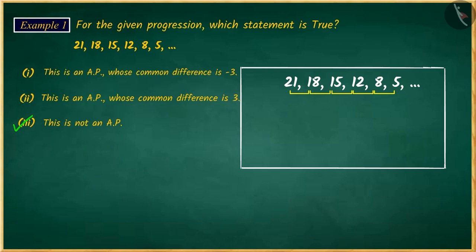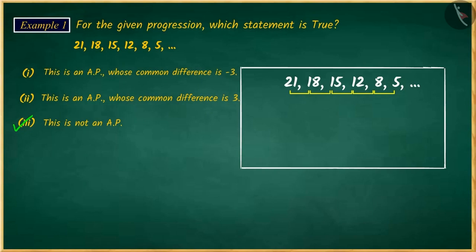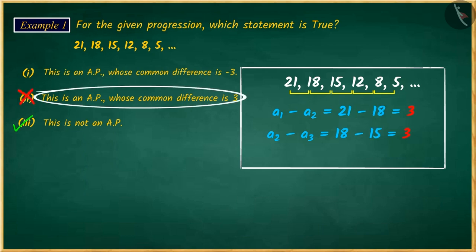Can you tell what was the mistake committed while solving this question which led us to choose the wrong option? For the given series, the common difference for only the first three consecutive terms was found. There too, instead of subtracting the previous term from a given term, we subtracted the next term from the previous term, which gives the common difference as three and that is a wrong answer.